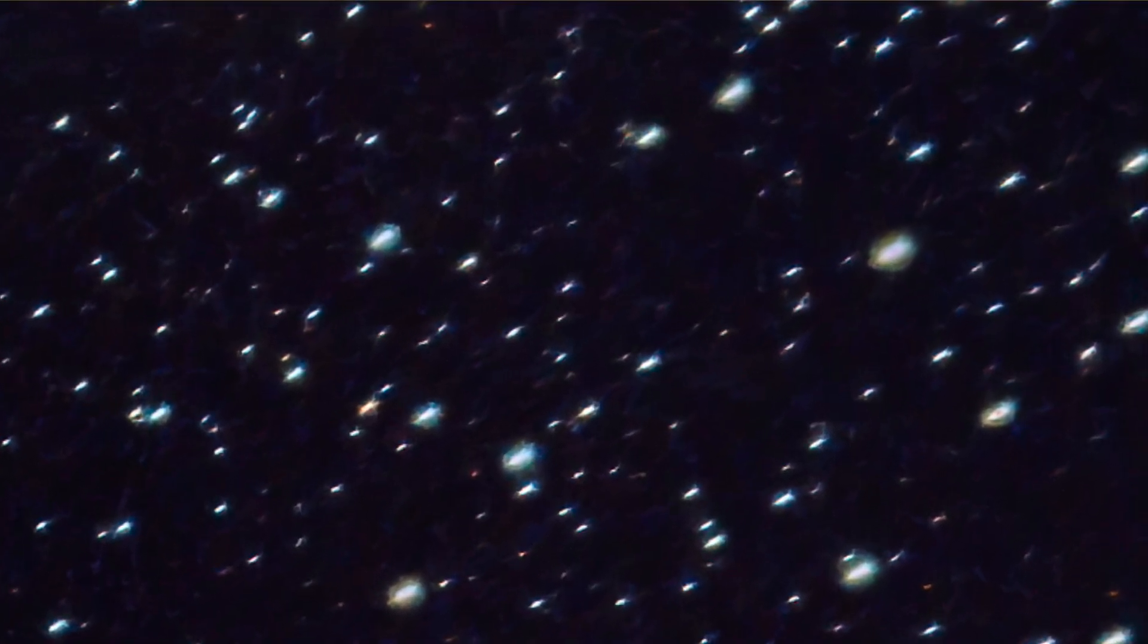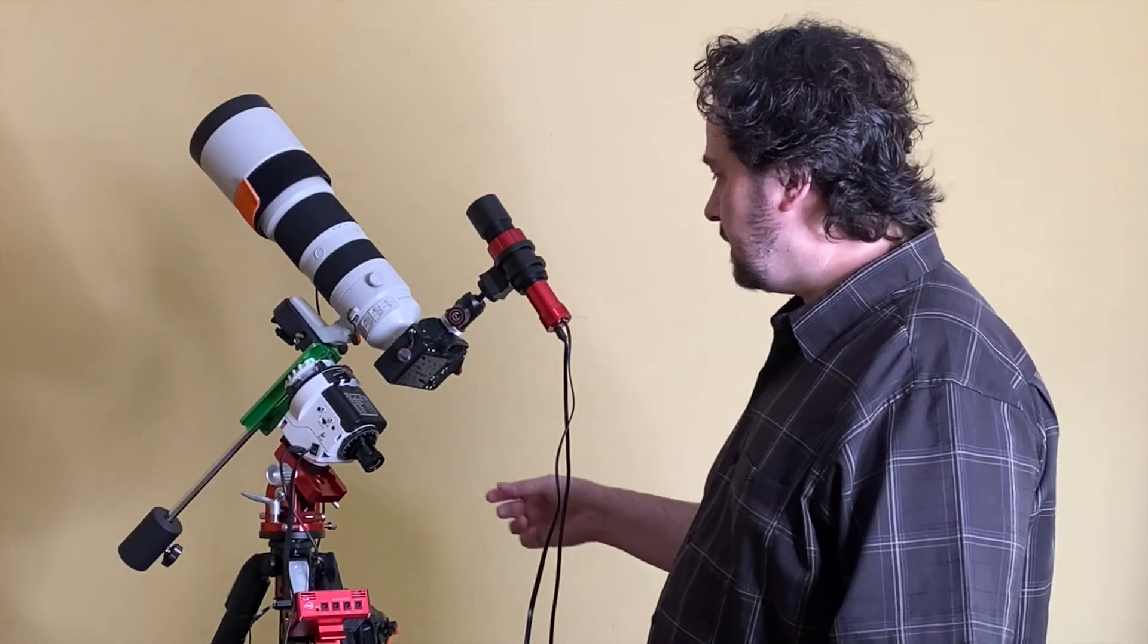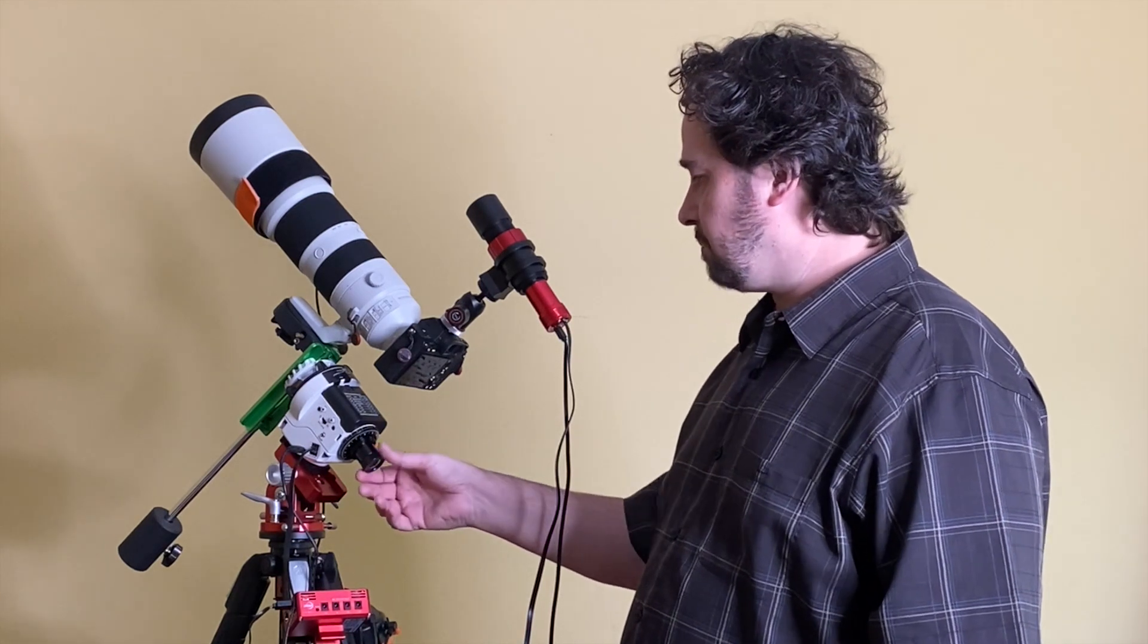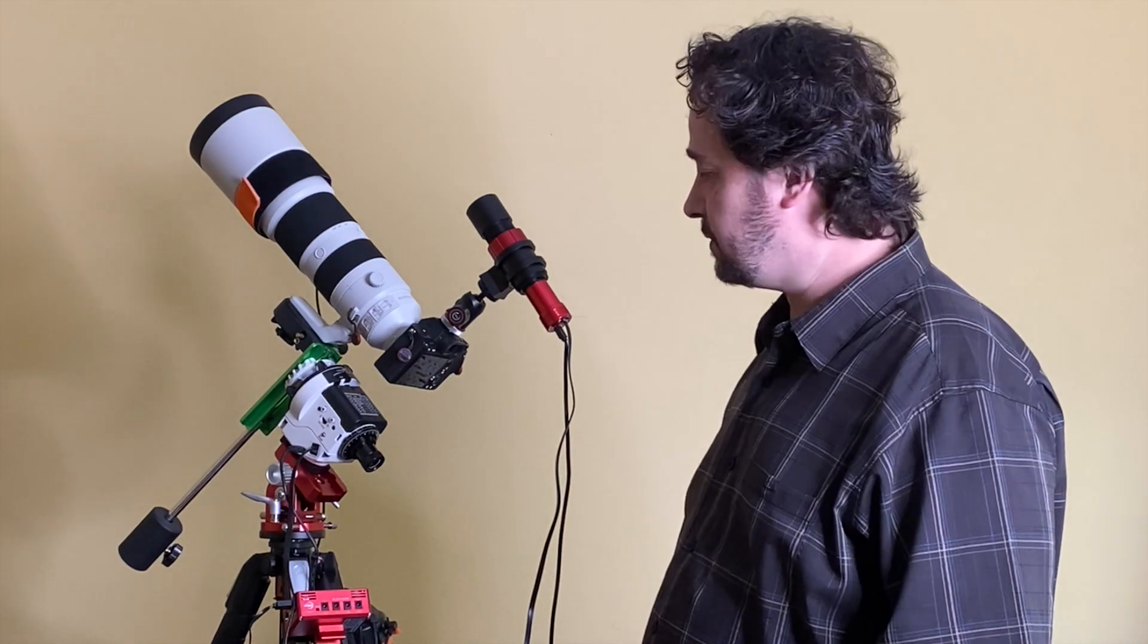Once you start getting a little longer than that, then you can actually still see some star movement. I thought that was my polar alignment isn't perfect, which that could be part of it, but I think just about as perfect as you can be, there is still some movement when you get up into the three, four, five minute exposures.